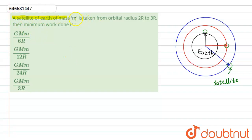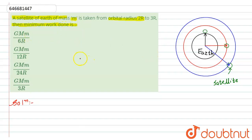Hello students. The question is: a satellite of mass m is taken from an orbital radius of twice R to thrice R. What is the minimum work done? According to the question, we are taking the satellite from an orbital radius of 2R to 3R, and we need to find the minimum work done.